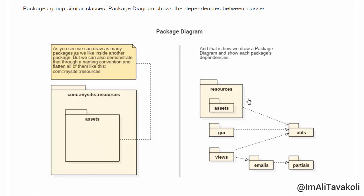In this next example, I demonstrate dependencies between packages: the resources, GUI, and views packages all depend on the utils package, and the utils package itself doesn't depend on any other packages. The views package depends on emails, and emails depends on partials.